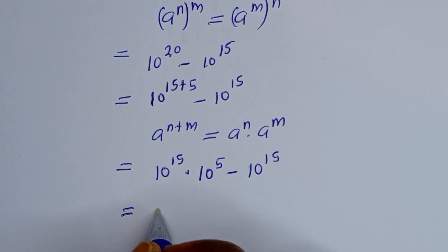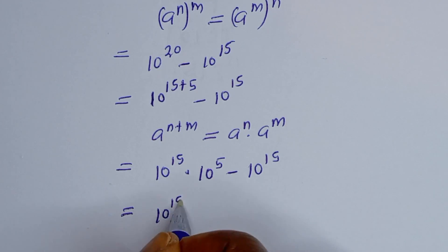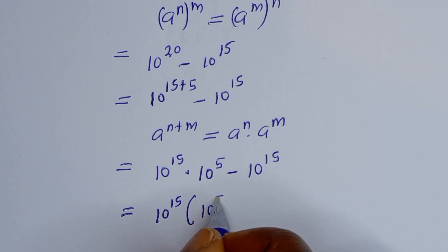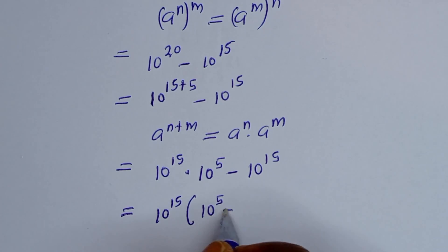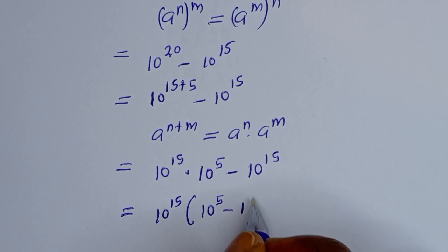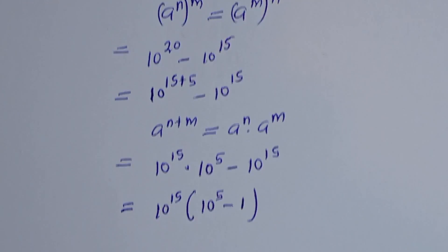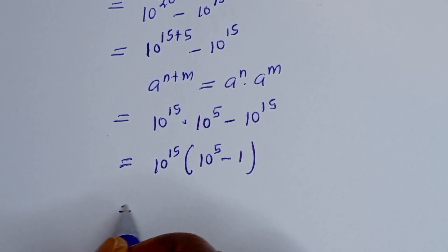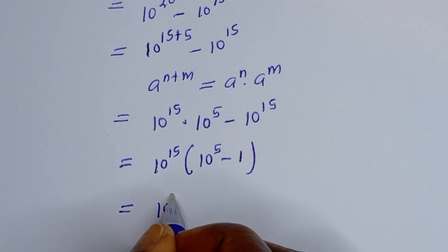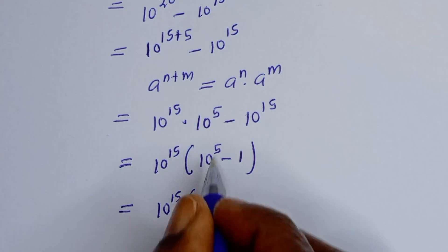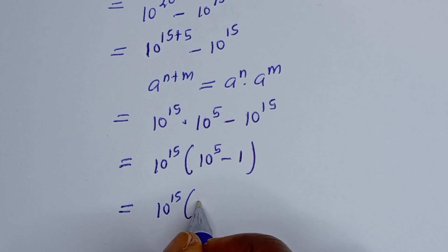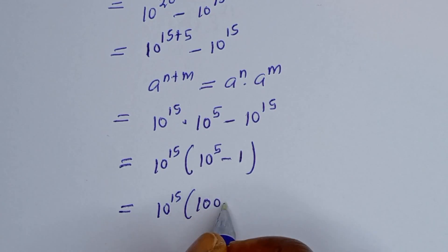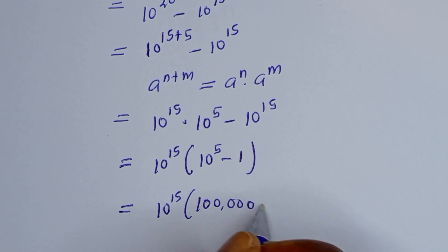Now 10 raised to power 15 is common — let's factor it out. This gives us 10 raised to power 15, times the bracket: 10 raised to power 5 minus 1. Note that 10 raised to power 5 minus 1 is the same as 100,000 minus 1.